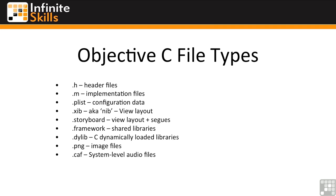Throughout iOS, the file type .plist, which is a standardized XML file, is used to hold configuration data, as well as serialize and deserialize NSDictionary objects to and from file storage. Xcode provides a hierarchical visual editor for editing plist files, or you can edit them as raw XML if you wish.